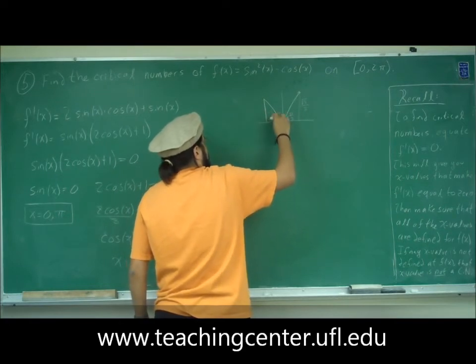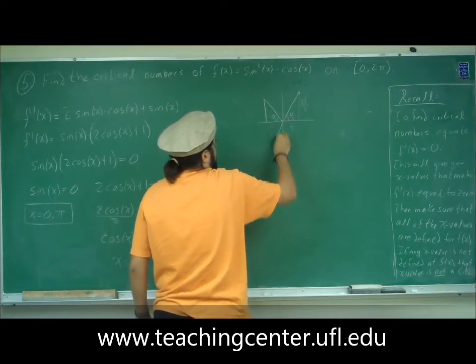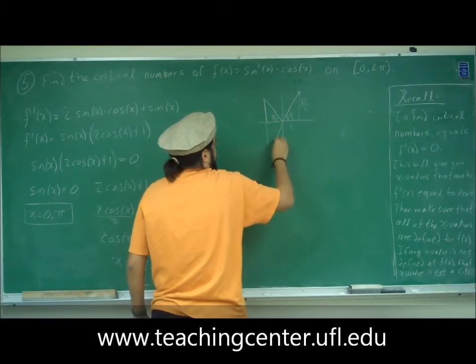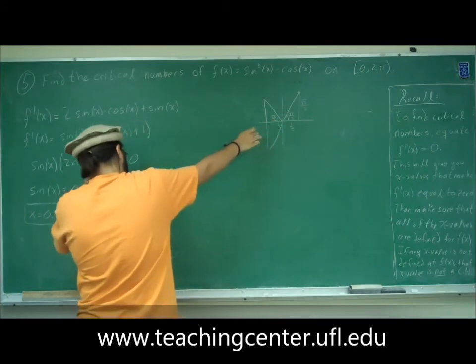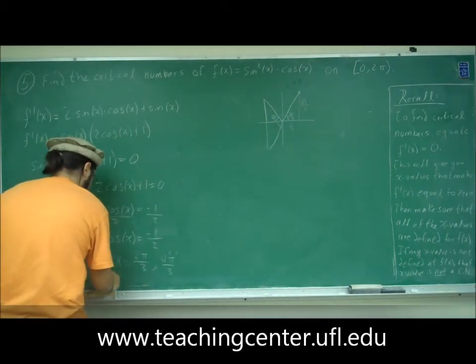So that would be the whole thing, two pi over three. And also down here. So you want these two angles. So that's two pi over three, and that's four pi over three. So that's when it's negative.